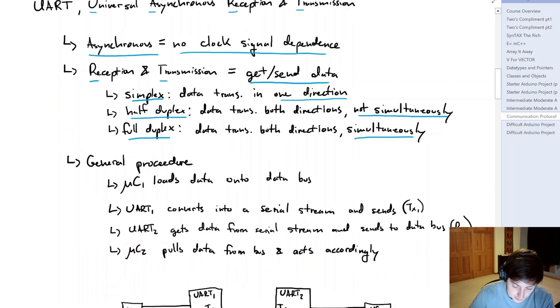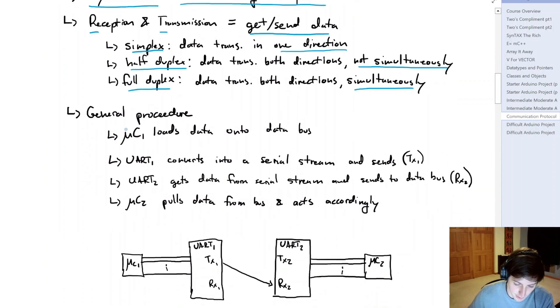Now the general procedure that happens is given here. So we could have something like a microcontroller, call it microcontroller one, and that's going to load data onto a data bus. So then you also have this UART one that's going to convert the data on the bus into a serial stream and then push it through this TX1 or transmitter one. So you can see TX1 is connected to RX2, which is receiver two on that second UART.